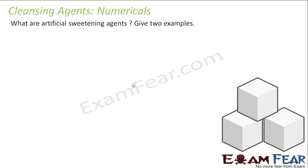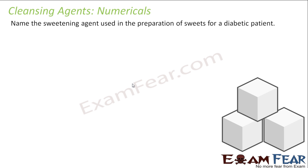What is an artificial sweetening agent? Artificial sweeteners can sweeten food but do not add calories to the body. Examples include aspartame, saccharin, sucralose, and alitame. Saccharin, alitame, and aspartame are also the sweetening agents used for diabetic patients.